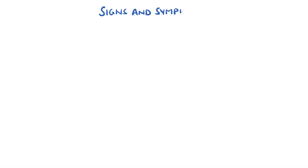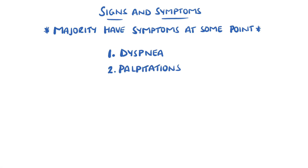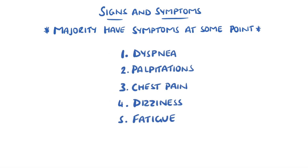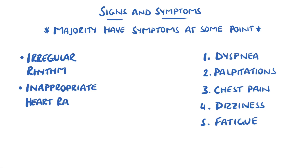Although often asymptomatic, most patients experience symptoms at some point. The most common are dyspnea, meaning shortness of breath, palpitations, chest pain, dizziness, and fatigue. These can be the result of the irregular rhythm, an inappropriate heart rate, and loss of the atrial kick, which supplies around 15% of the cardiac output.